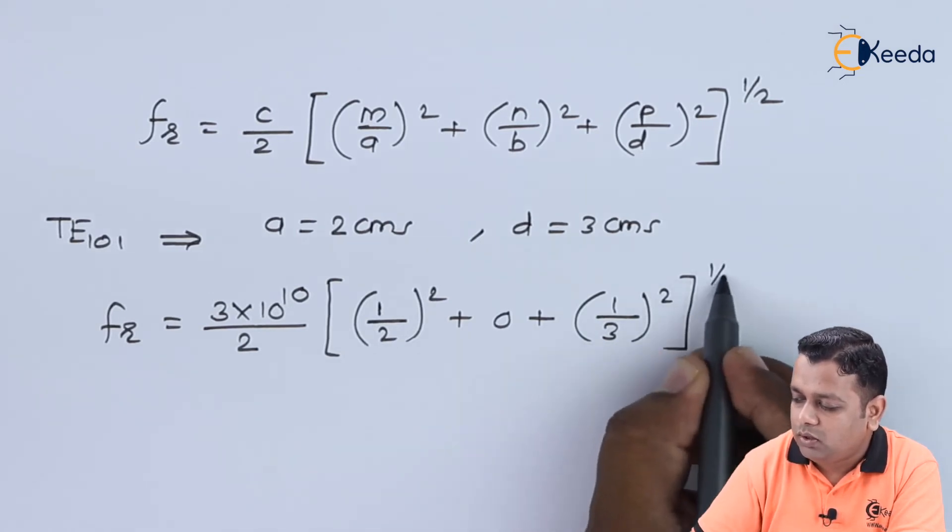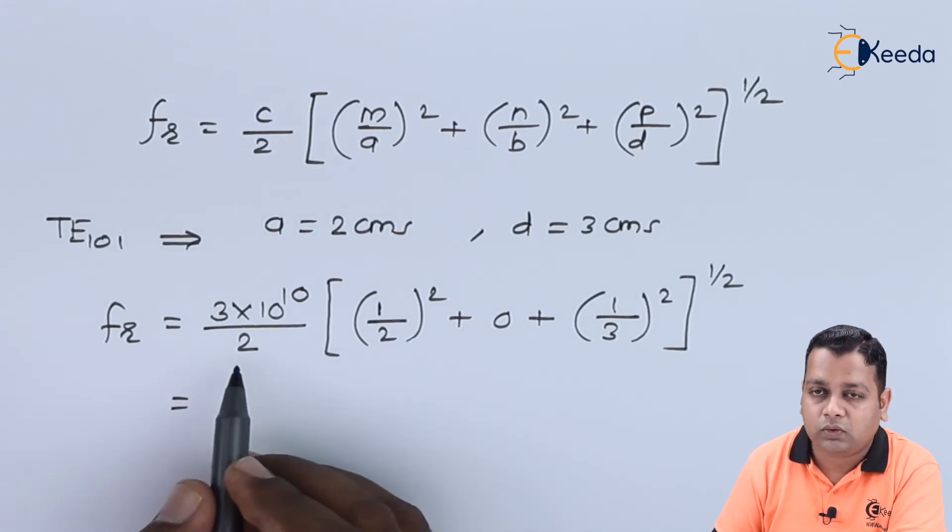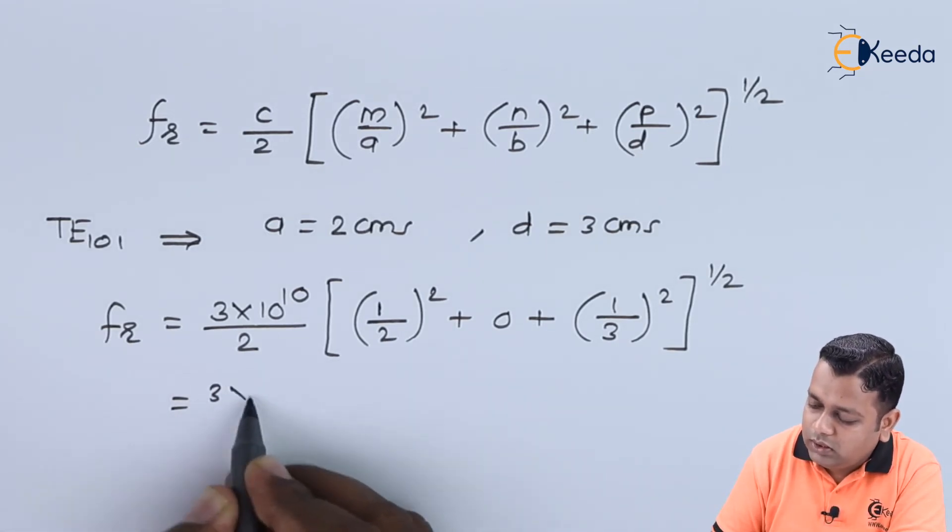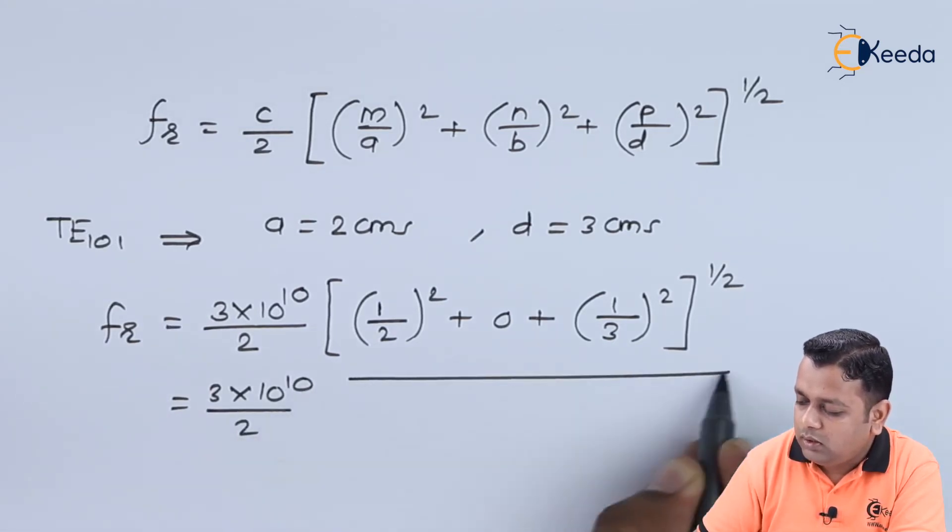The addition is to be put under square root. So we make the calculations. It is 3 times 10 raised to power 10 divided by 2.